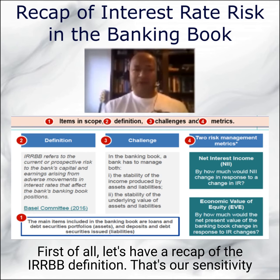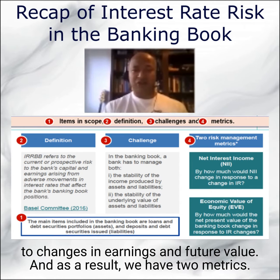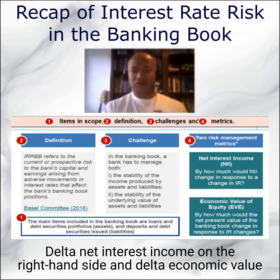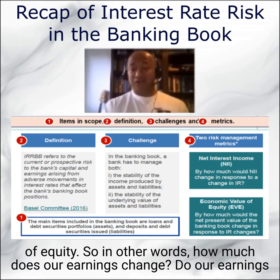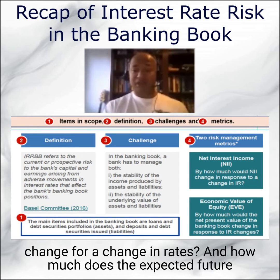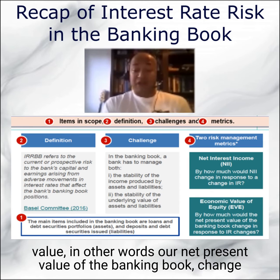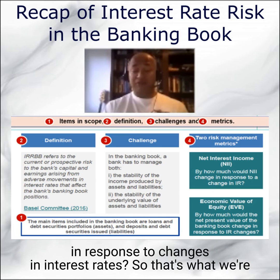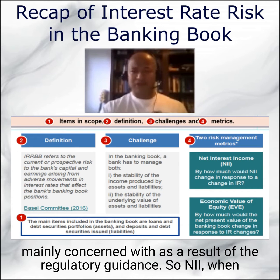First, let's have a recap of the IRRBB definition: it's our sensitivity to changes in earnings and future value. As a result, we have two metrics — delta net interest income and delta economic value of equity. In other words, how much do our earnings change for a change in rates, and how much does the expected future value (our net present value of the banking book) change in response to changes in interest rates. That's what we are mainly concerned with as a result of the regulatory guidance.